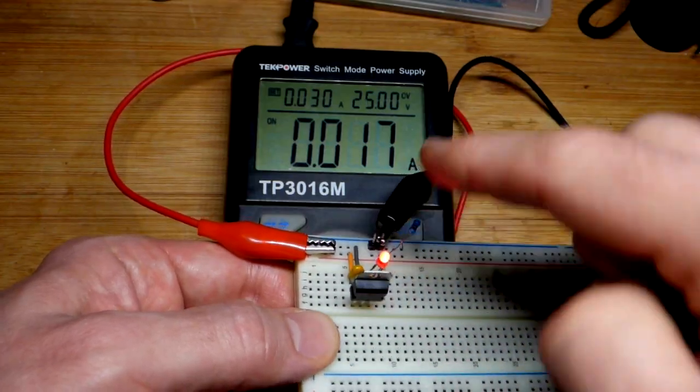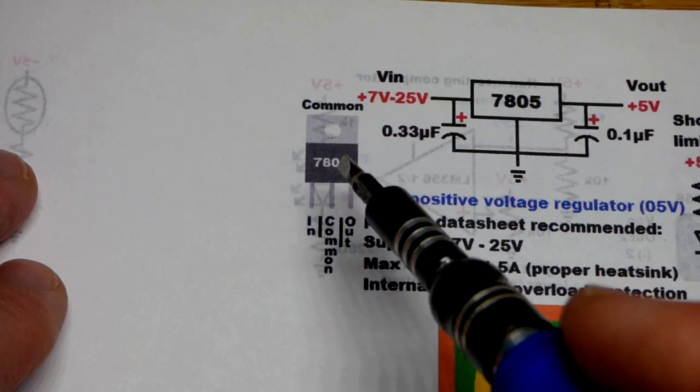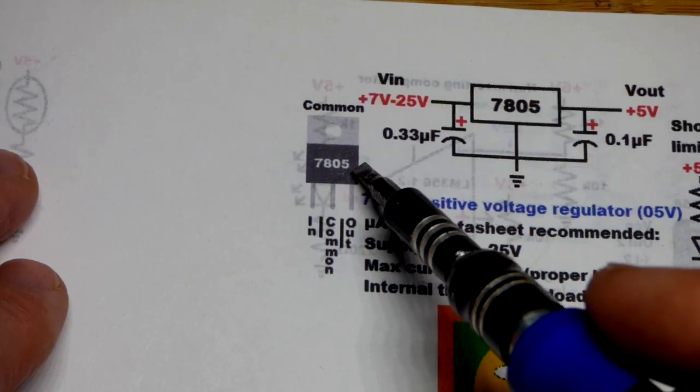This does not convert power though - all that extra voltage is just waste heat. So now here's the 7805 voltage regulator, 5 volts.